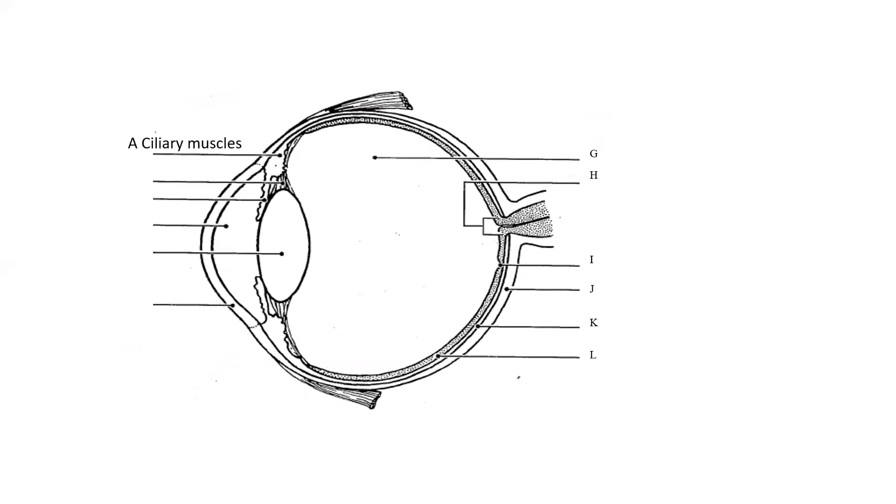Ciliary muscles. They control the eye. Suspensory ligaments. They're also involved in controlling the lens. The iris is the pigmented portion of the eye. The aqueous humor is this fluid between the front part of the cornea and the lens.